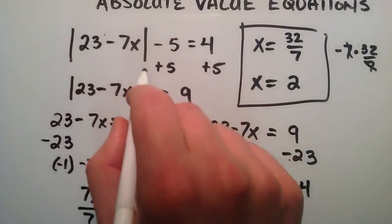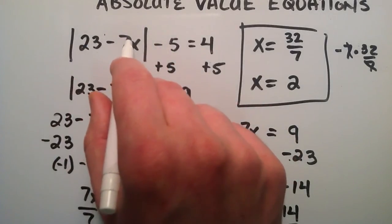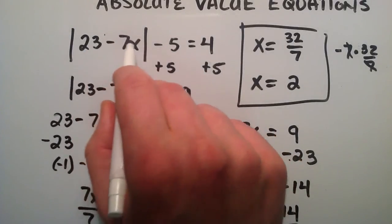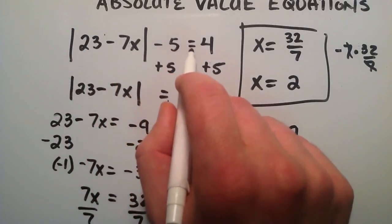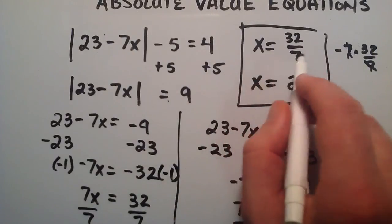Then if we take the absolute value of negative 9, that equals 9. And then 9 minus 5 is equal to 4. So this solution works.